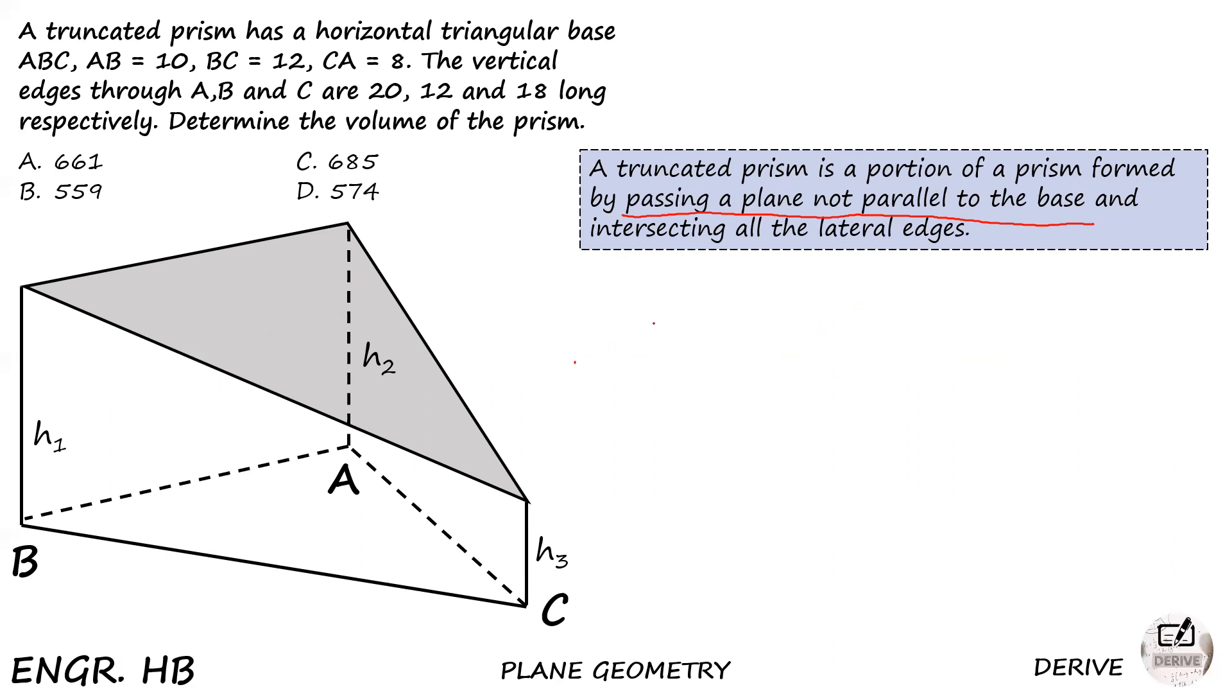What is the volume of a truncated prism? The formula is: volume equals A sub B times summation of H over N. The summation of H over N is the average of the heights since they have different values. If the plane passed parallel to the base, we'd have 10 plus 10 plus 10 divided by 3 equals 10. Since this plane is not parallel to the base, this becomes the average of the three heights or N heights.